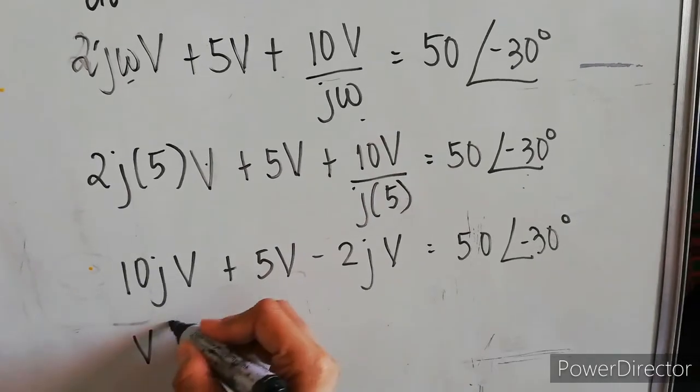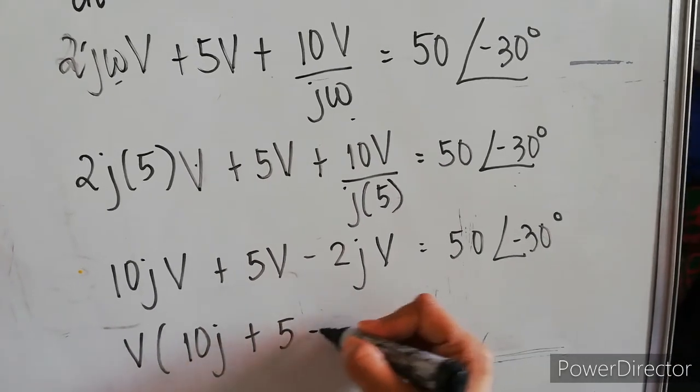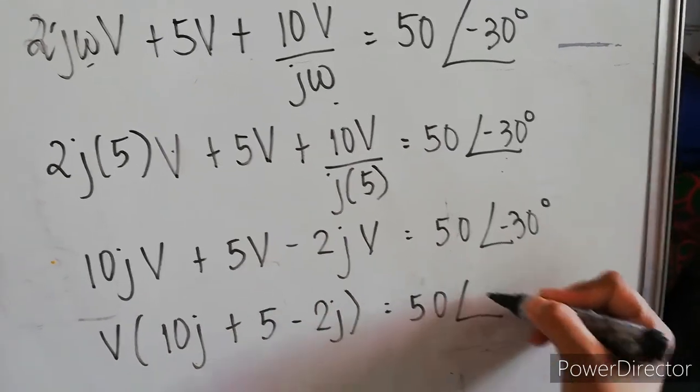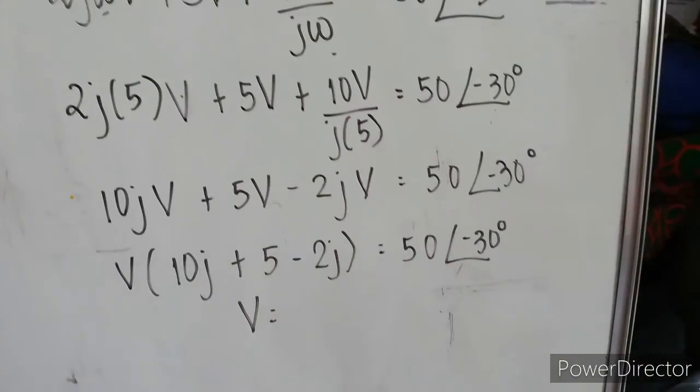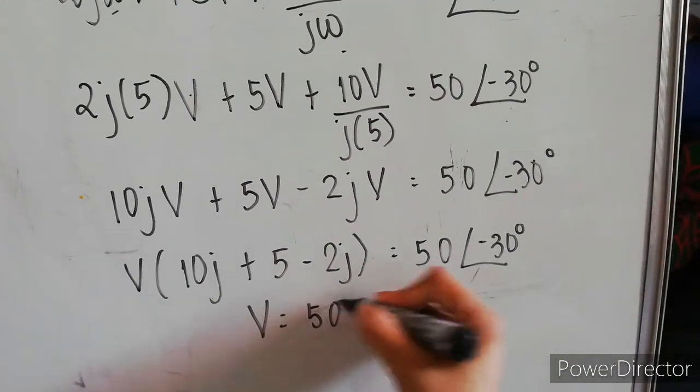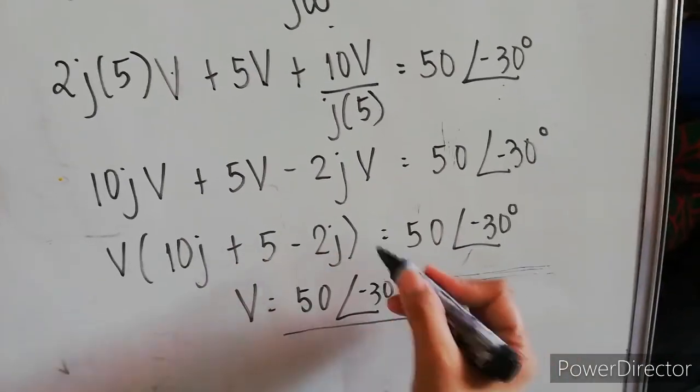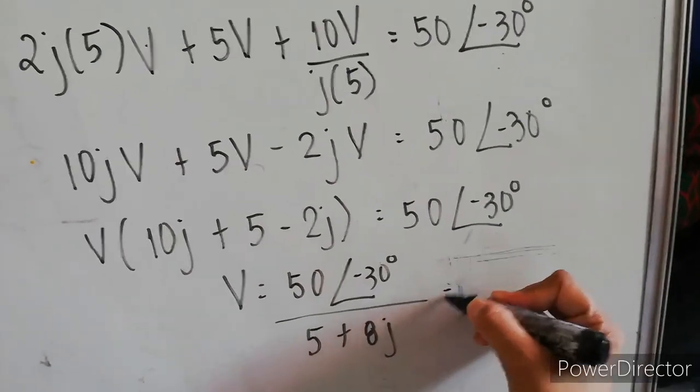Let's factor out the V. We have V(10j + 5 - 2j) = 50∠-30°. Then let's look for V, that equals 50∠-30° over (5 + 8j).